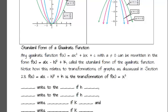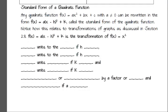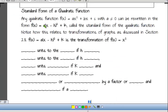We have the standard form of the equation. Any quadratic function F of X equals AX squared plus BX plus C can be rewritten in the form F of X equals A times the quantity X minus H squared plus K. That's what we call the standard form of the quadratic function. Notice how this relates to transformations of graphs as discussed in section 2.8.